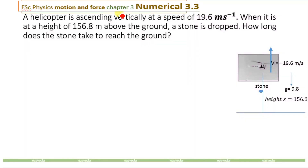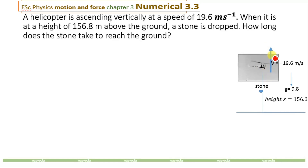This is numerical number 3 from the third chapter of FSC Physics, and the chapter is motion and force. We will solve this numerical by using the simplest possible method. The numerical is: a helicopter is ascending vertically at a speed of 19.6 meters per second. This is the helicopter, this is the ground, and the helicopter is ascending vertically upward with a velocity of 19.6 meters per second.